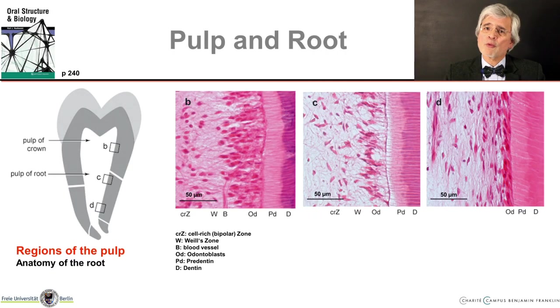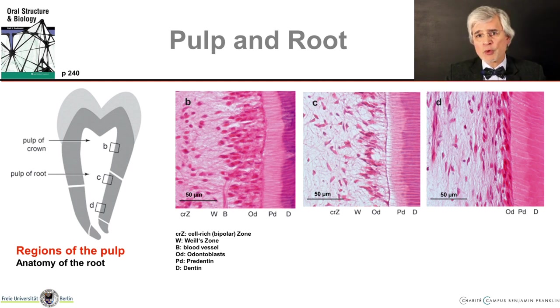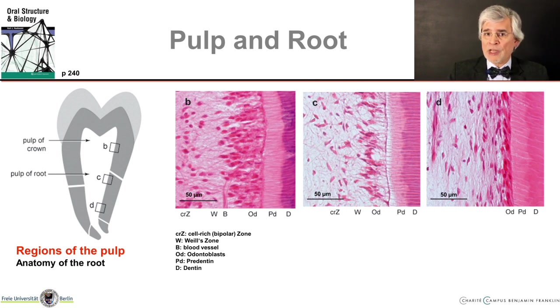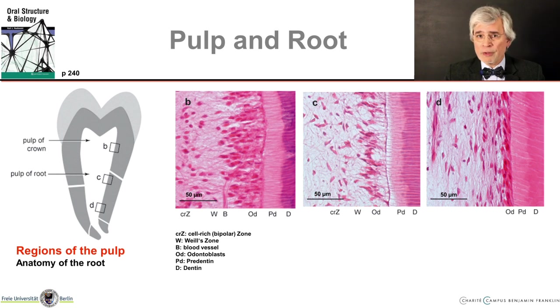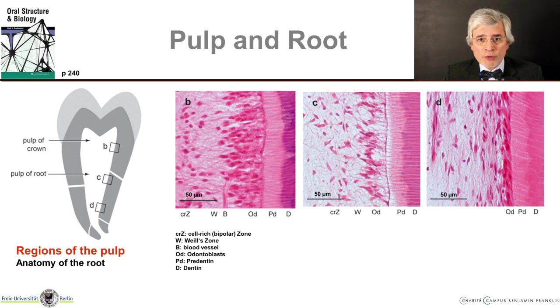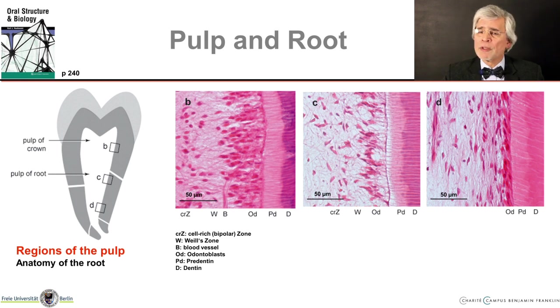The distribution and shape of cells in the pulp tissue is not the same in all places. In the crown pulp, the odontoblasts are slender, columnar, and close together. The odontoblasts are the cells that form the dentine, and therefore they are the outermost cell layer of the pulp. In the area of the root pulp, they are also closely together but have a more cubic shape. And in the area of the root tip, they are quite flat. We will talk about the other tissue layers in the pulp a little later.